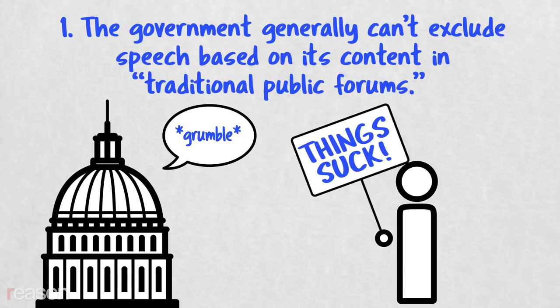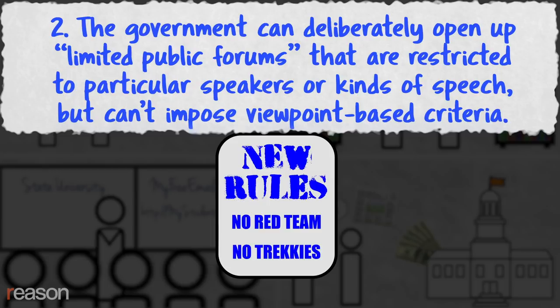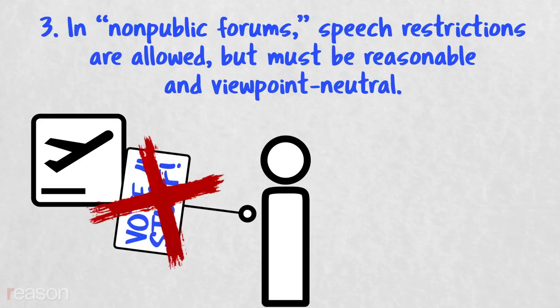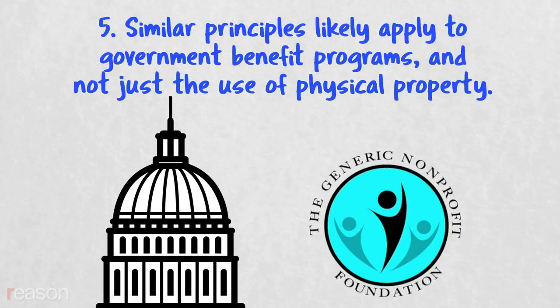So, to sum up: the government generally can't exclude speech based on its content in traditional public forums. The government can deliberately open up limited public forums that are restricted to particular speakers or kinds of speech, but it can't impose viewpoint-based criteria. In non-public forums, speech restrictions are allowed but must be reasonable and viewpoint-neutral. For government property set up for the government itself to speak, the government can pick and choose what viewpoints it conveys or endorses. Similar principles likely apply to government benefit programs, and not just the use of physical property.